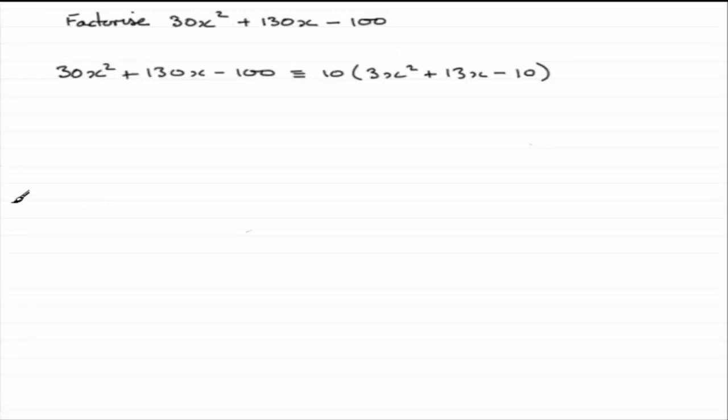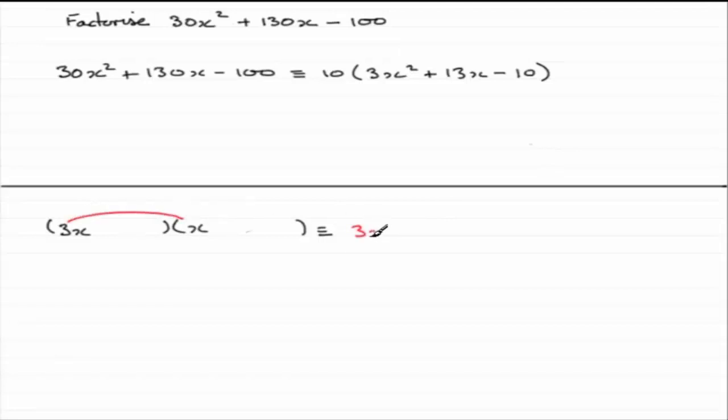So how do we factorise this quadratic factor? Well, we know that it's come from expanding two brackets. And in the usual way, we must choose two x terms at the front here that multiply together to give the 3x squared. And that's got to be a 3x and an x. 3x times x will give us the 3x squared that we require. It doesn't matter which way around you do this, it will still give 3x squared. So I've just chosen to put 3x in the first bracket.